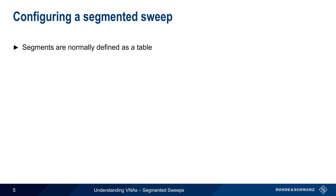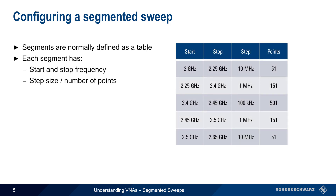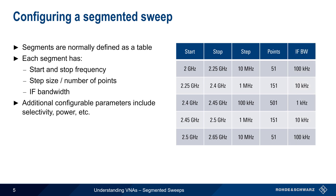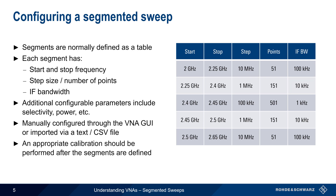Segmented sweep is normally configured by means of a table, where each segment has its own independent start and stop frequencies, step size/number of points, and IF bandwidth. Other parameters such as selectivity, power, etc. can also be defined per segment. Tables are either manually configured through the VNA user interface, or are imported in the form of a text or CSV file. An appropriate calibration should be performed after these segments and their parameters have been defined.